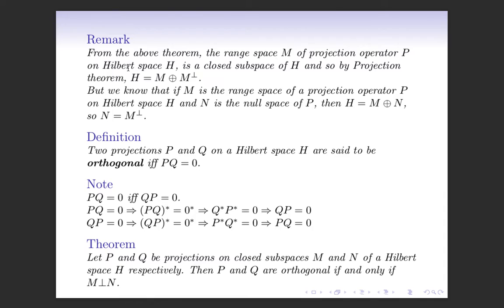We now state a remark from the above theorem: the range space M of a projection operator P on Hilbert space H is a closed subspace of H. Since M is a closed subspace of H and H is a Hilbert space, by the projection theorem H equals the direct sum of M and the orthogonal complement of M. Also, if M is the range space and N is the null space of P, then H equals M direct sum N. From these two expressions, N equals the orthogonal complement of M — that is, the null space of P is the orthogonal complement of the range space of P.